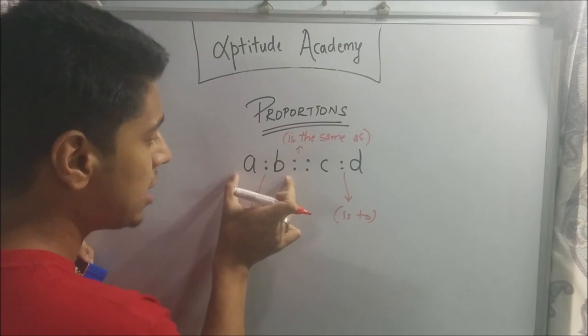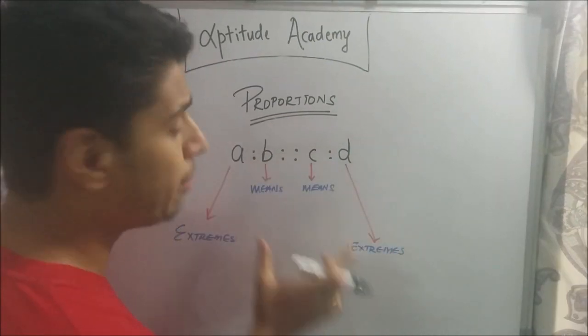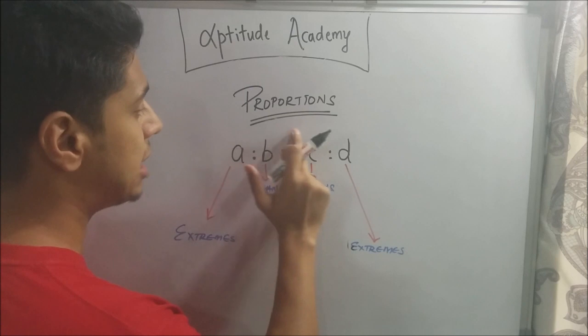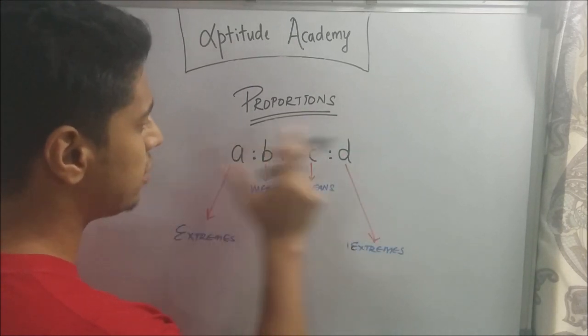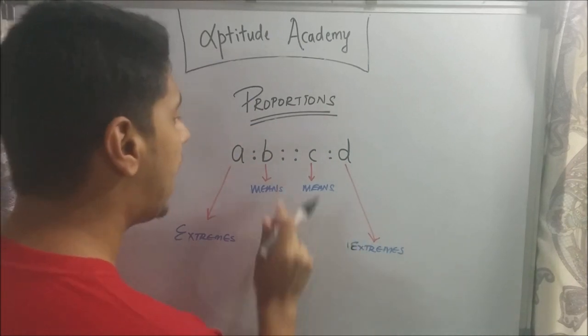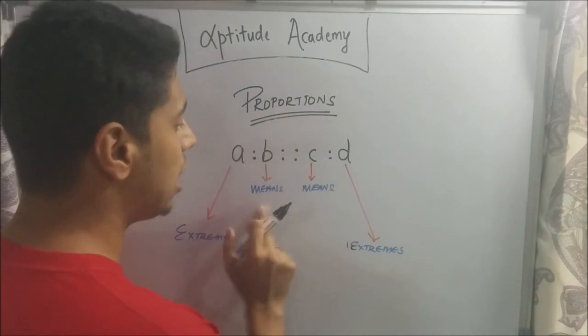You are basically saying A is to B and C is to D is the same. Now, you have certain names for these. The ones on the outer are called as extremes, for obvious reasons, and B and C that are inside are known as the means.